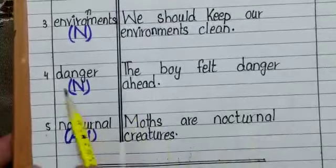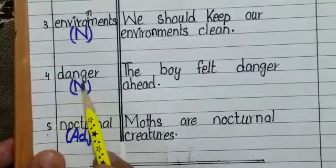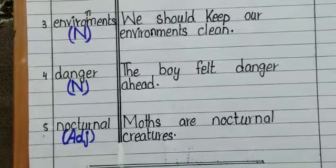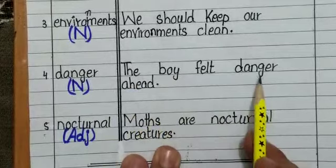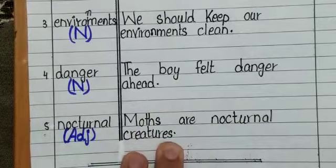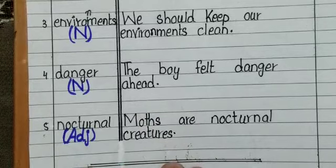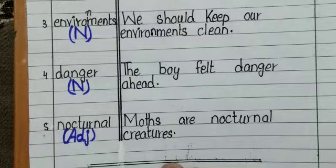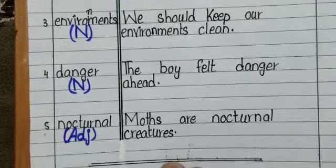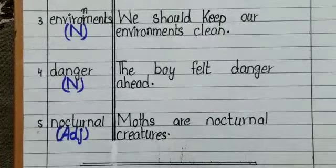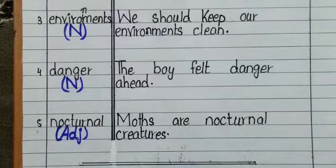Now come to number four: 'danger' — D-A-N-G-E-R. According to grammar it is a noun. The example sentence is: 'The boy feels danger ahead.' You can also say: 'I think we are out of danger.' Or: 'The refugees believe that their lives are in danger.' So you can use the word danger in different kinds of examples.